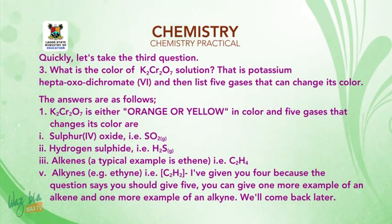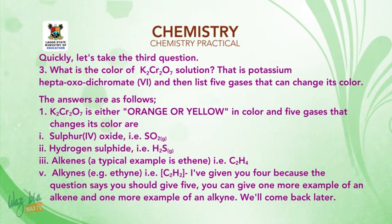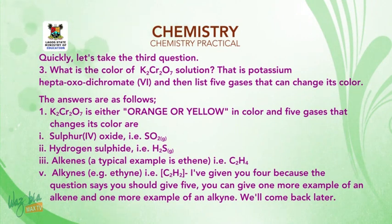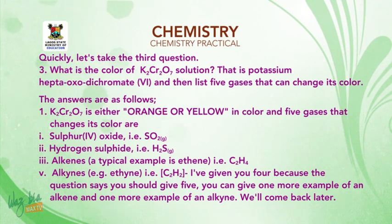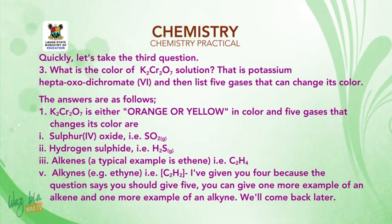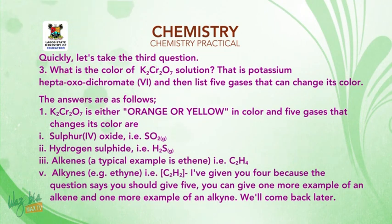Quickly, let's take the third question: what is the color of K₂Cr₂O₇ — that is potassium heptaoxodichromate(VI) — and list five gases that can change its color? The answer: K₂Cr₂O₇ is either orange or yellow in color.